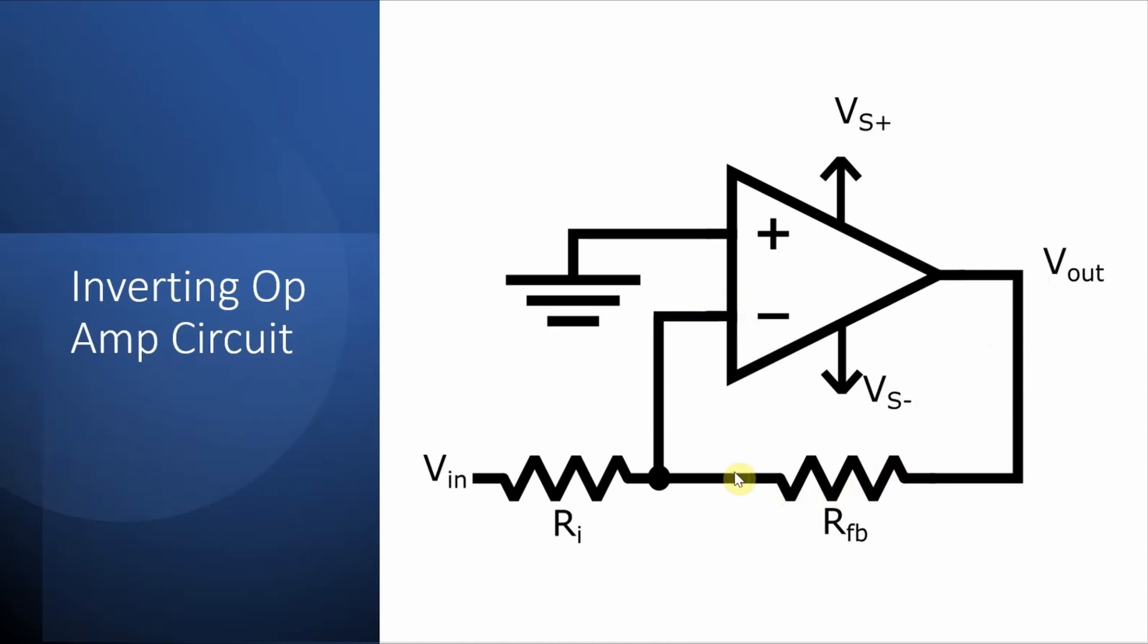In this configuration you get a controlled gain based on the values of resistors and an output voltage that is 180 degrees out of phase with the input.